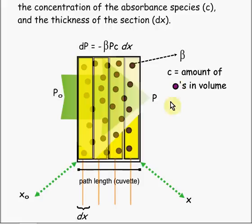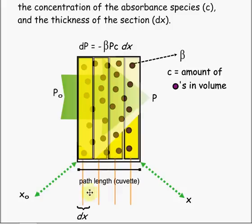The little dots in the medium indicate the concentration. We have X-naught, which is the start of the path length, and X, which is the ending path length. And we have dX, which is the change in the path length. The change in path length is just one of these rectangular shapes.